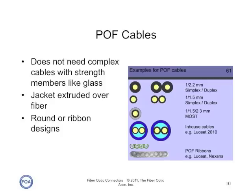Because POF cables are typically premises cables and don't need to be pulled long links like outside plant cables, they don't need lots of strength members or fancy jackets to protect the fibers. So a lot of POF cables are simply a plastic jacket extruded over the plastic fiber. But there are other types of cables, including multi-fiber cables inside of a single jacket, and even ribbon cables that can be used where multiple links are needed, even running them sometimes under carpet.